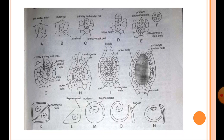The androcyte mother cells are cubical structures, and by diagonal division of each androcyte mother cell, two androcytes are formed. These androcytes metamorphose and ultimately form biflagellate antherozoids.